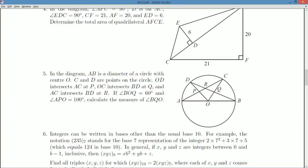If angle BOQ, so starting at B going to O and Q, that's 60 degrees, and angle APO is 100 degrees. Calculate the measure of angle BQO, the angle in this triangle at Q. That's what we're asked to do.